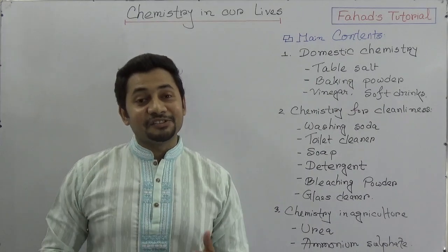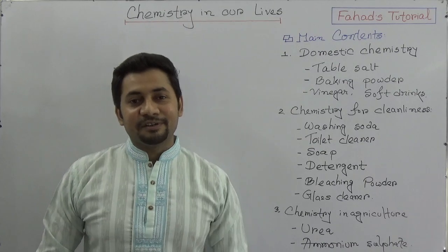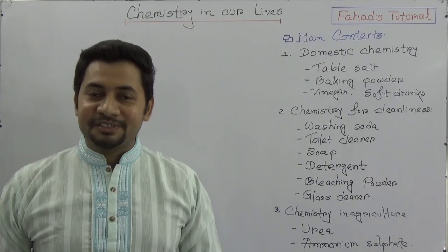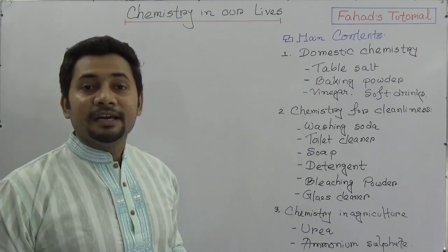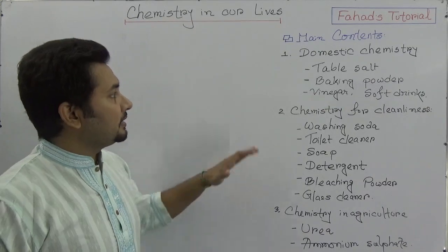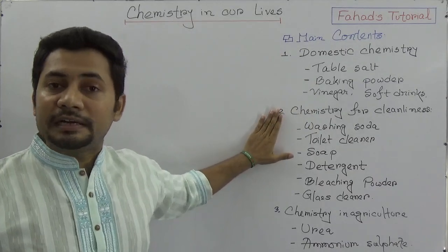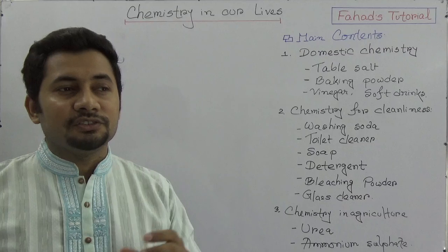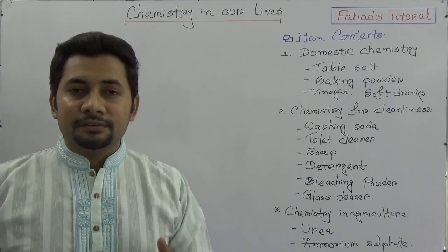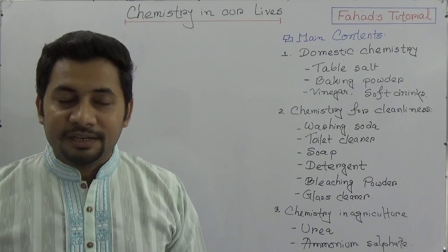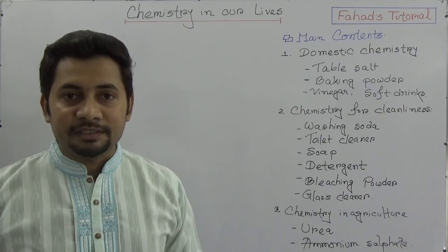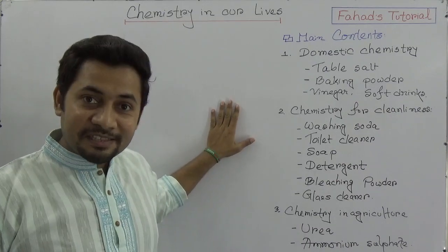Welcome to Fahad's tutorial. In this video I shall explain the last chapter of SSE Level Chemistry in English version, that is 'Chemistry in Our Lives.' This is a very interesting chapter. If we look at the content, there are three different titles or topics: number one is domestic chemistry, number two is chemistry for cleanliness, and number three is chemistry used in industries and agriculture.